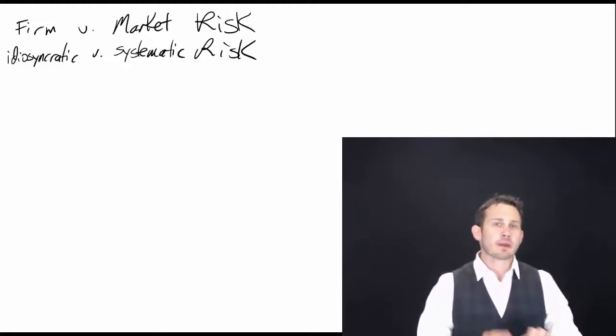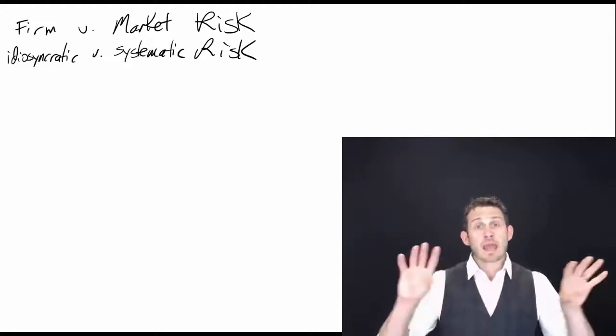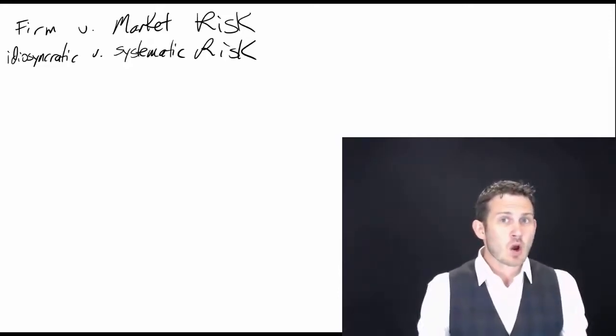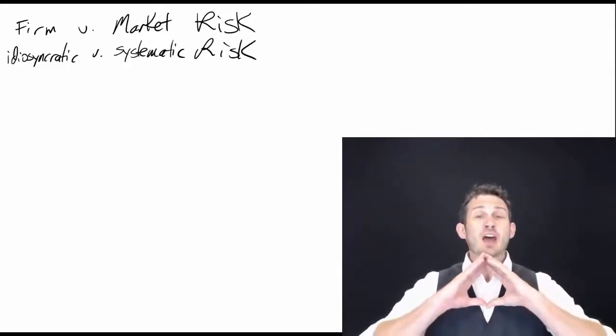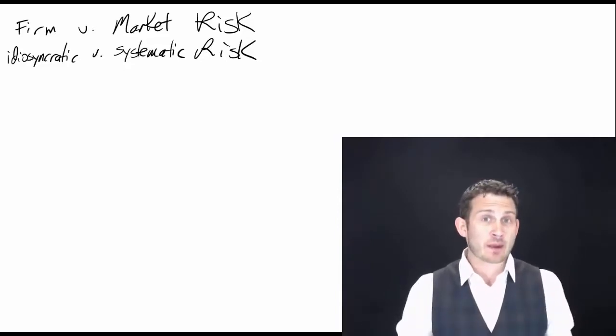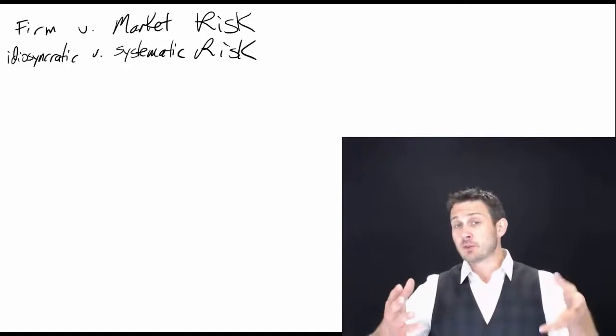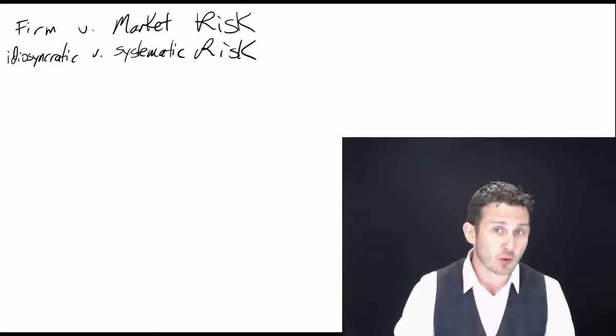Basically what we have here is the difference from the firm and the market. So a firm level risk, that is an individual risk. That is the risk of just General Motors going bankrupt. General Motors goes bankrupt and that is going to be bad for the stockholders of General Motors.